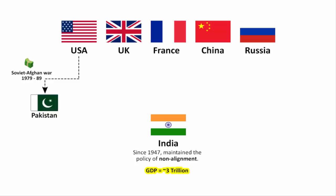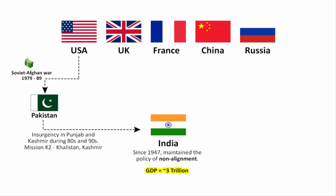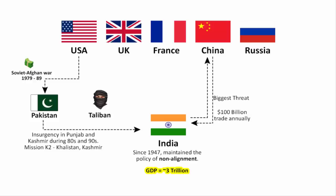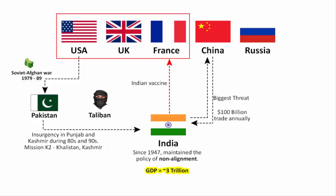India knows about the United States' role in aiding Pakistan throughout the 1980s, and how that led to insurgency in Punjab and Kashmir during the 80s and 90s. But India cannot openly call out America and make an enemy of it. Similarly, China is the biggest threat to India, yet both countries maintain almost $100 billion worth of trade annually. Diplomacy is full of contradictions. Right now, India needs America's and European countries' support for putting international pressure on countries like Pakistan, China and the Taliban, as well as for recognizing Indian vaccines and resolving issues like the purchase of the S-400 missile defence system from Russia.